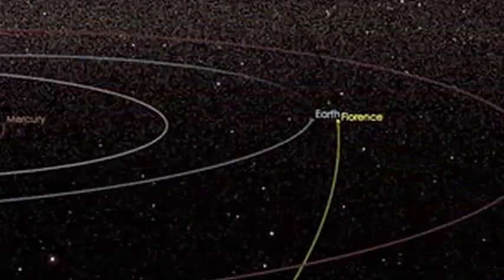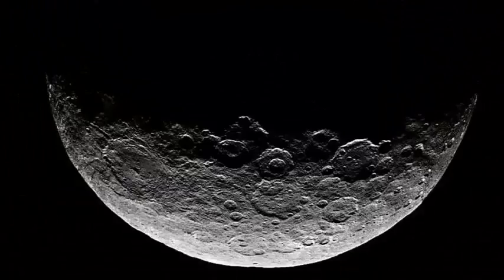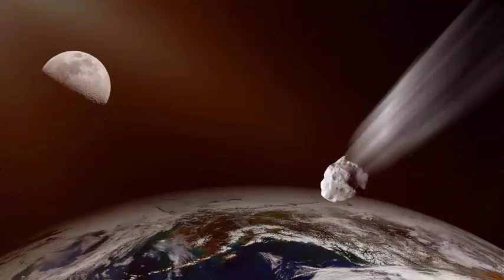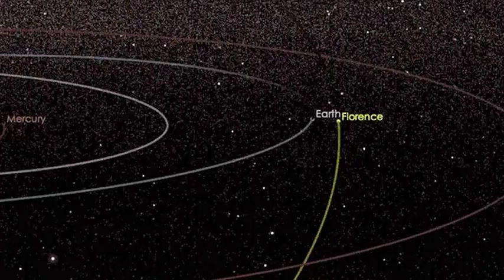An asteroid called Florence will pass 4.5 million miles from Earth on September 1st, NASA's Jet Propulsion Laboratory announced. That's 18 times the distance from Earth to the moon. If that doesn't sound impressive, consider its size at 2.7 miles.